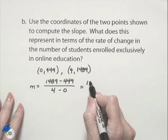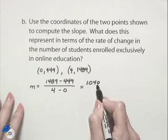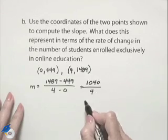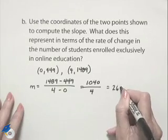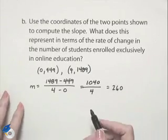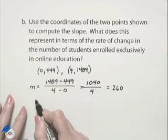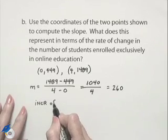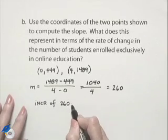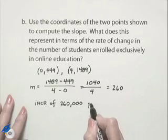Our numerator is 1,040. Our denominator is 4. Dividing that gives us a value of 260. Now what does this represent? It means it's an increase of 260,000 students per year.